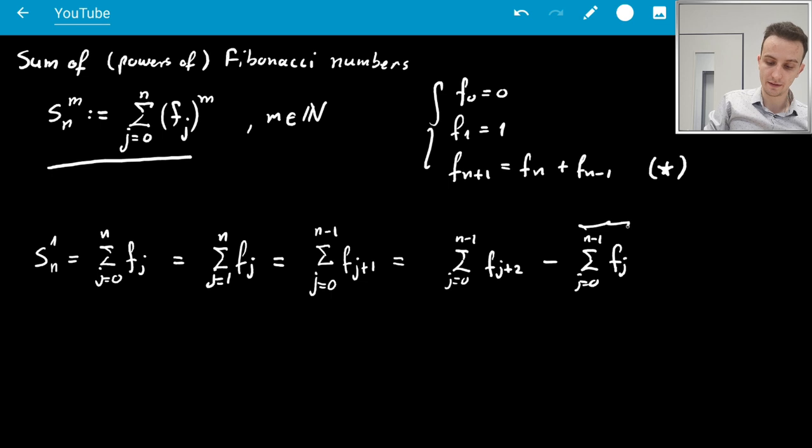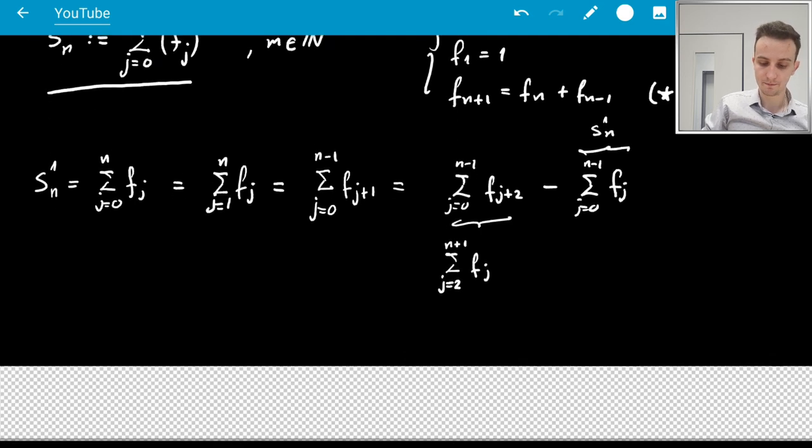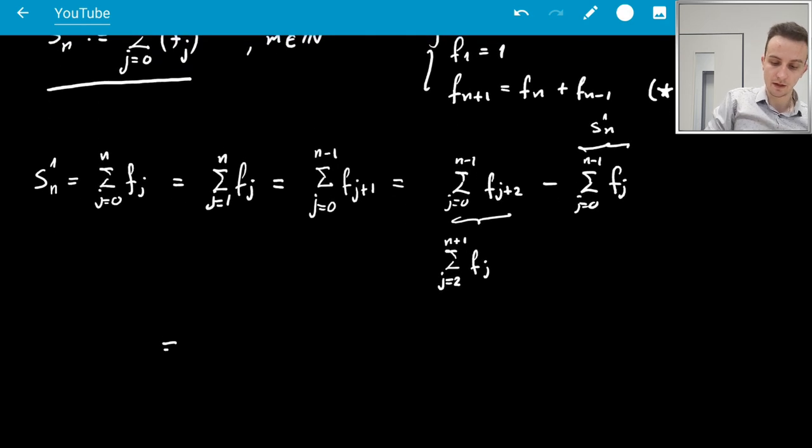And now, this part I recognize as S_1n. And this part, I'm going to change the indices. So, this will be from j equals 2 to n plus 1 of F_j. So, now, let's add in the two missing ones. I'm completing so that it would go from 0.